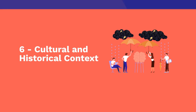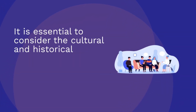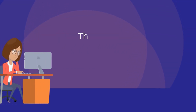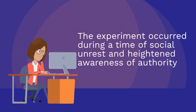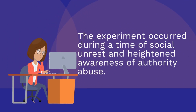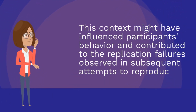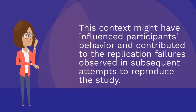Cultural and historical context. It is essential to consider the cultural and historical context in which the Stanford Prison Experiment took place. The experiment occurred during a time of social unrest and heightened awareness of authority abuse. This context might have influenced participants' behaviour and contributed to the replication failures observed in subsequent attempts to reproduce the study.